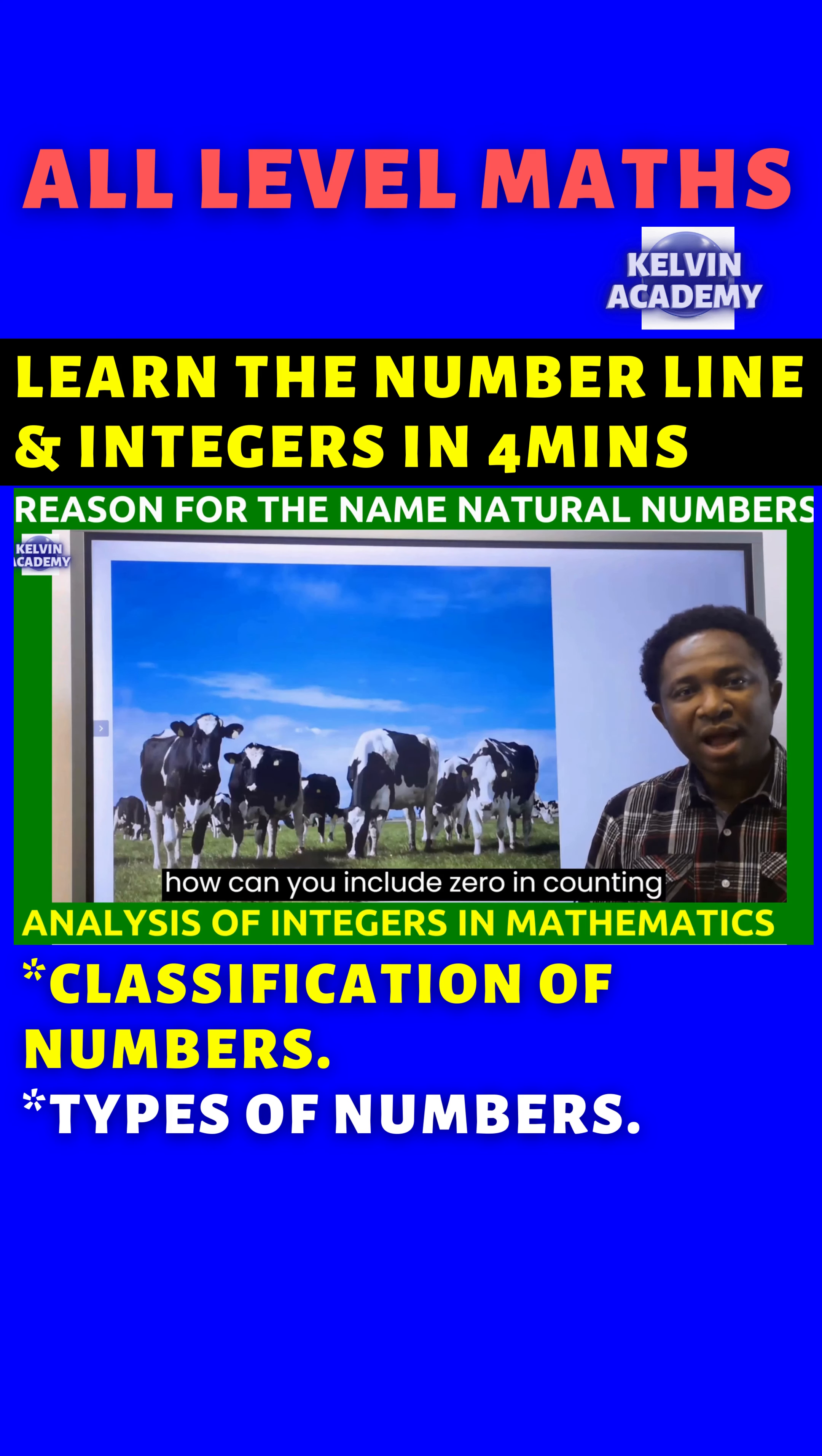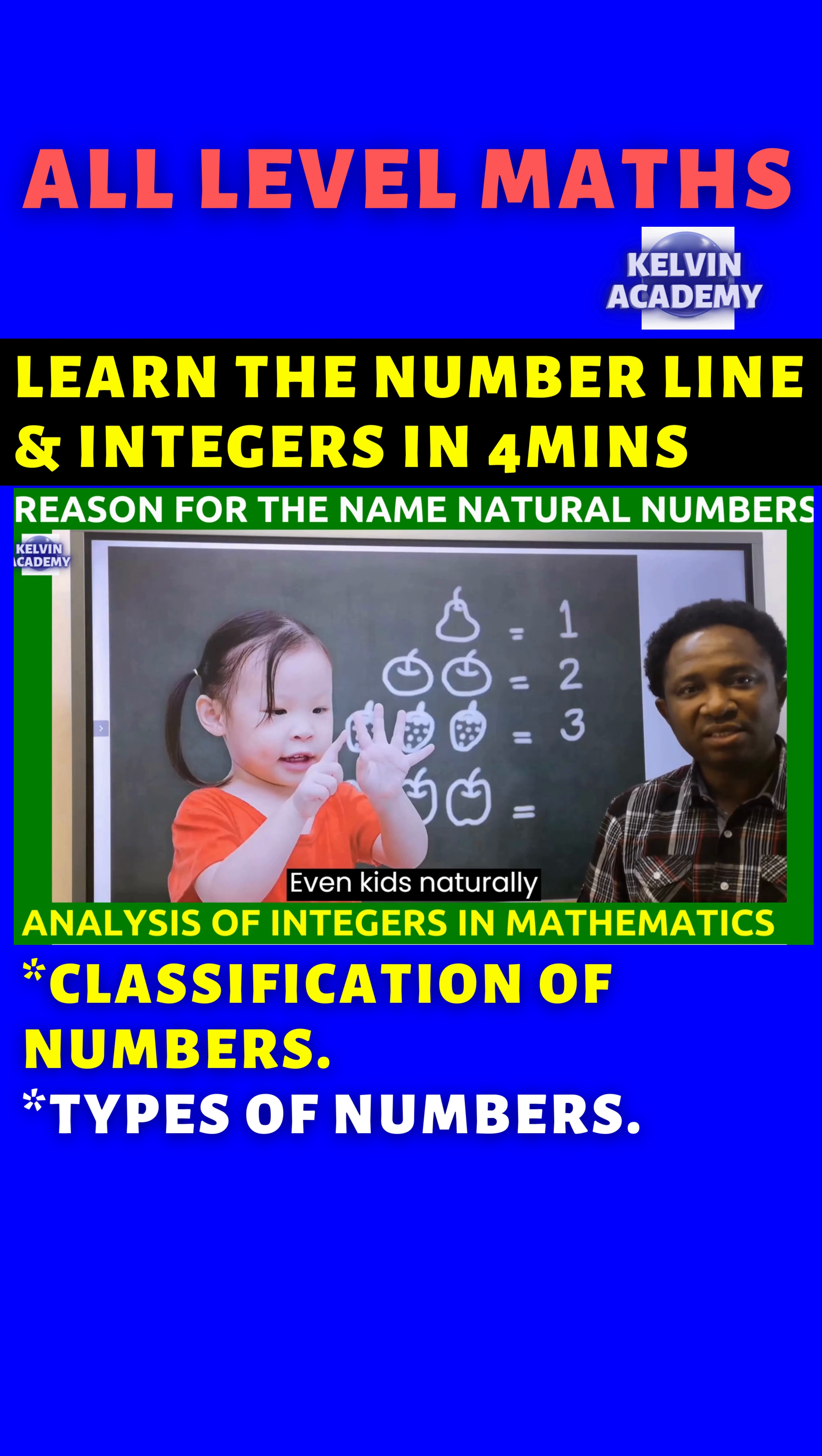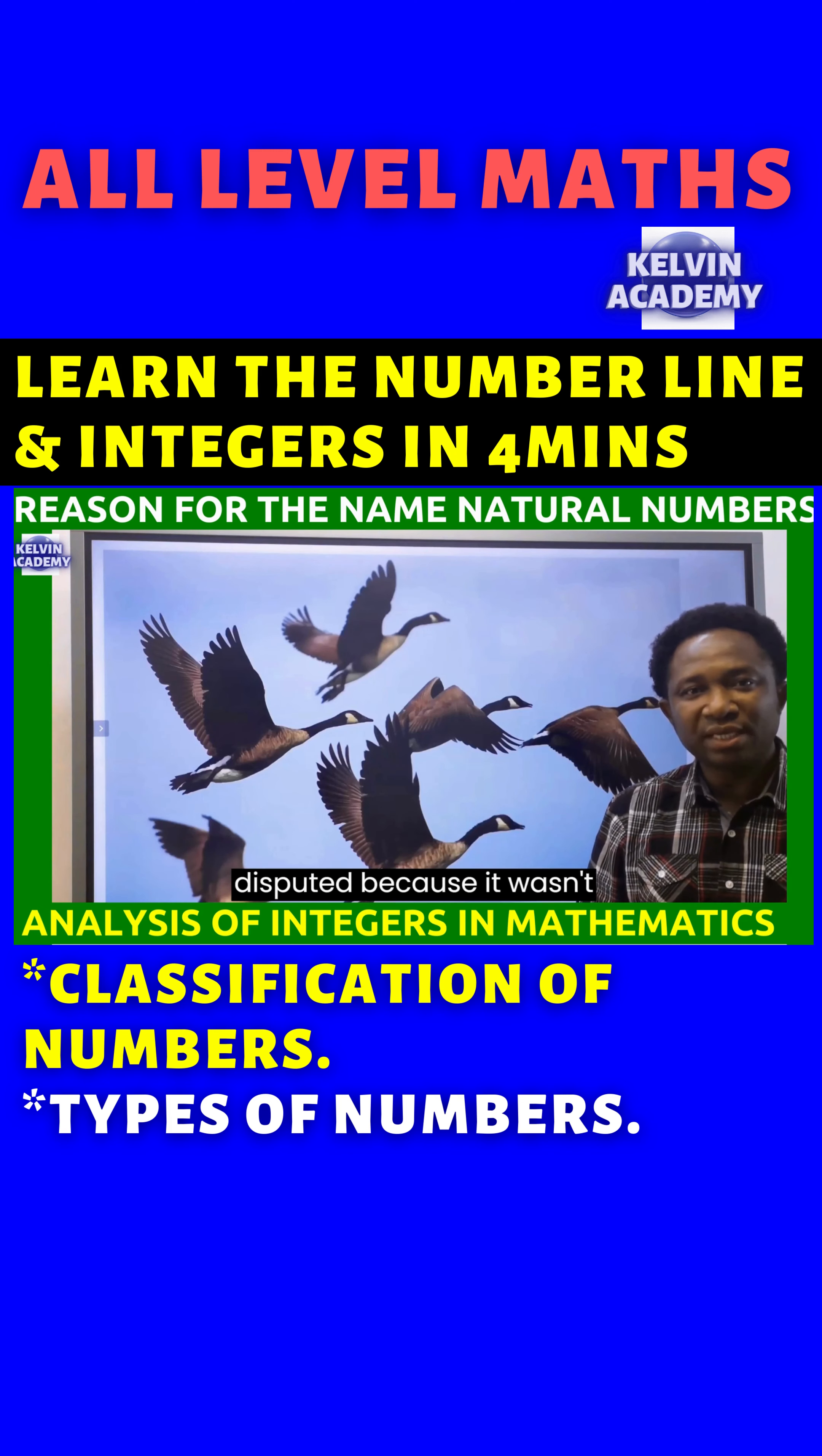To them, how can you include zero in counting cows or counting goats? For example, even kids naturally count from 1. Zero was disputed because it wasn't natural counting objects from zero.